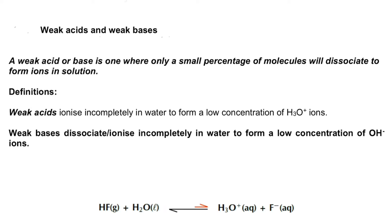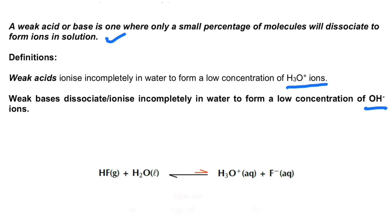A weak acid or base is one where only a small percentage of molecules will dissociate to form ions in solution. Weak acids ionize incompletely to form a low concentration of H₃O⁺, while weak bases dissociate incompletely to form a low concentration of OH⁻. If an acid or base produces a low concentration of H₃O⁺ or OH⁻, it is considered weak.